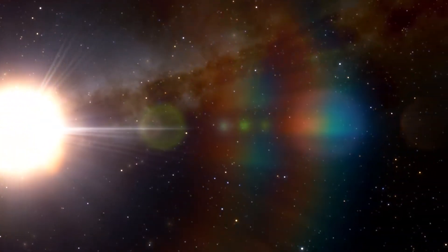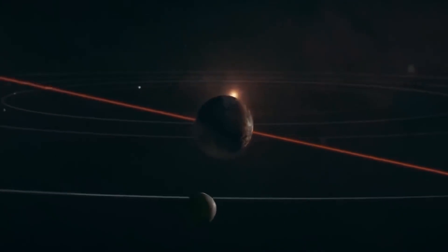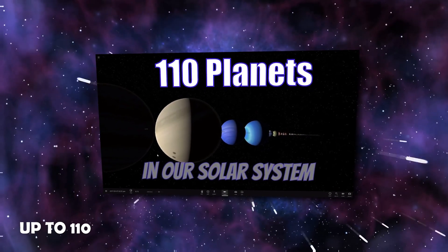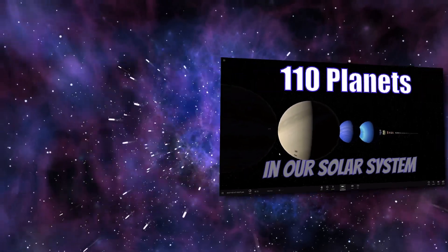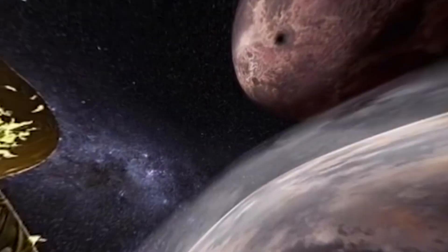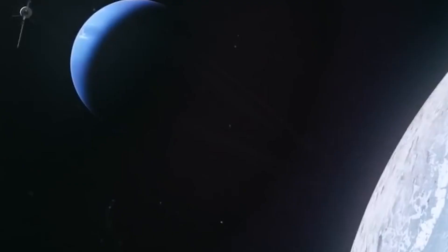According to one definition proposed in 2017, a planet is a circular object in space that is smaller than a star. This would bring the total number of officially acknowledged planets up to 110, and it would also result in the reinstatement of Pluto as a planet. However, it would also have the same effect on the moon of Earth and on many other moons in the solar system.